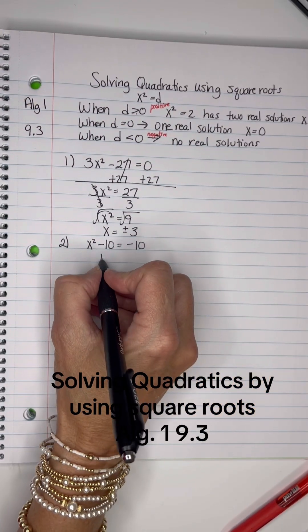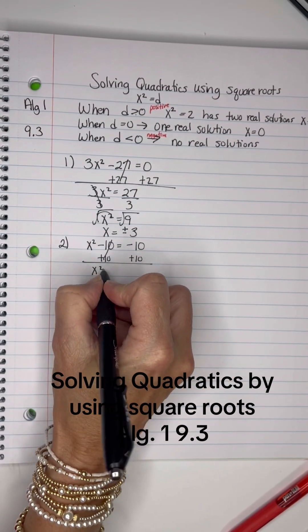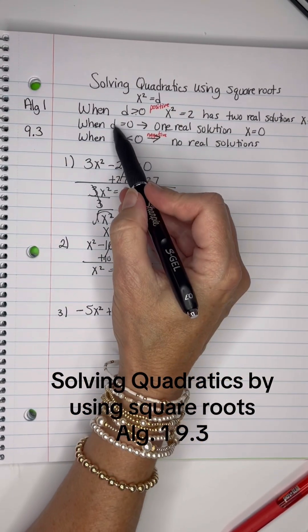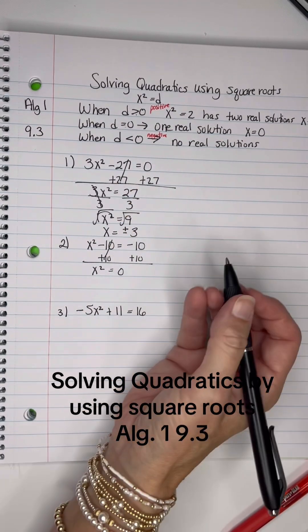On this one, I'll add 10 to both sides, and I have x squared equals zero. We said if d is zero, if this is zero right here, there's one solution: zero.